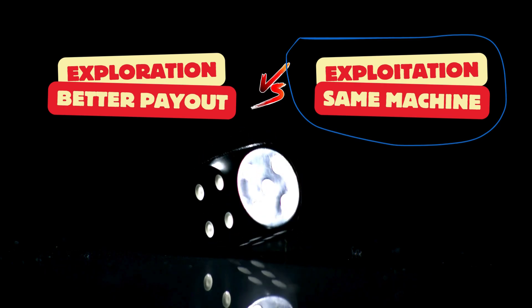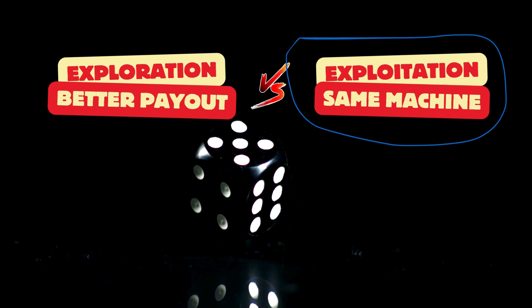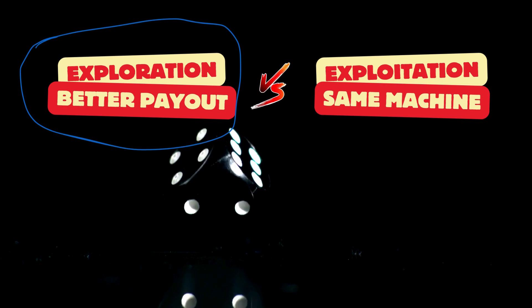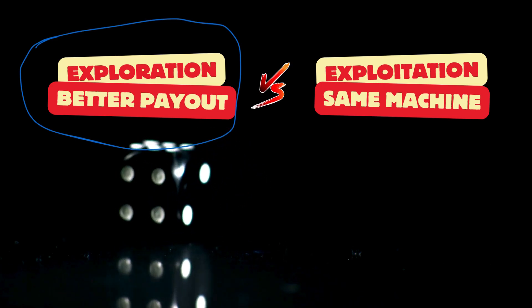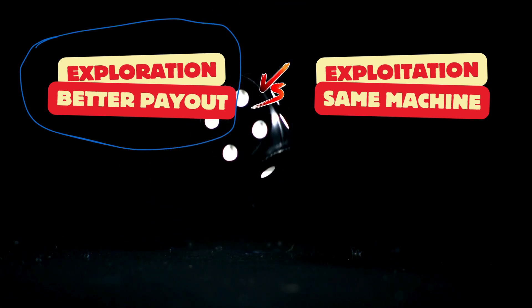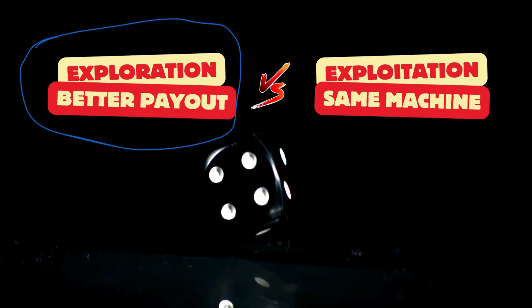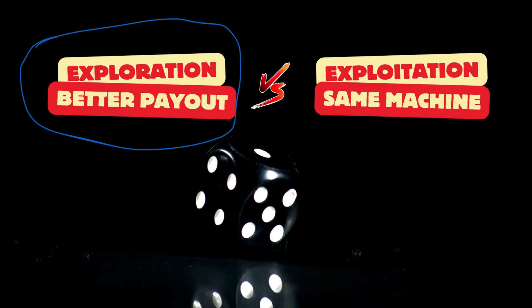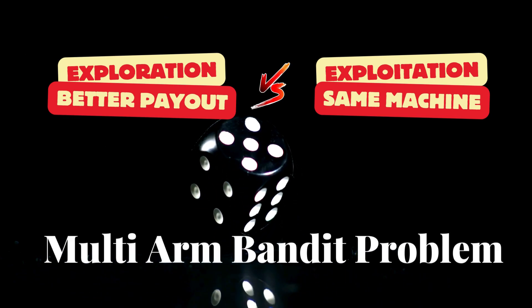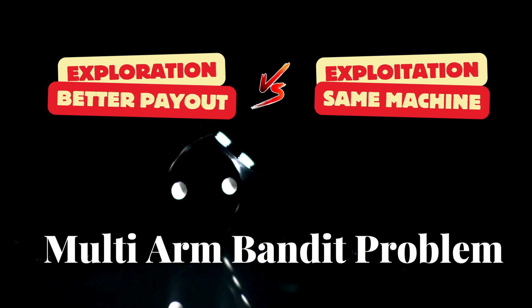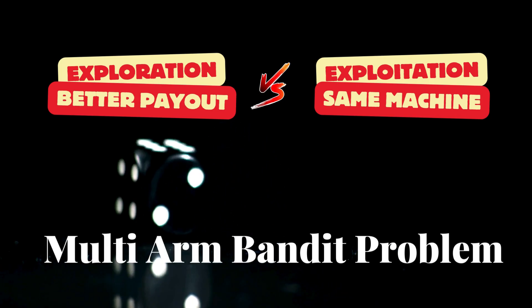Do you keep playing the same machine that has given you some wins, hoping it's the best? This is called exploitation, sticking to what you know. Or do you try different machines, searching for the one that might even have a better payout? This is called exploration, getting more information than what you have. This trade-off between exploration and exploitation is exactly what is referred to as the multi-armed bandit problem.